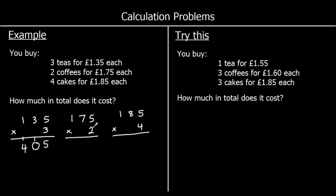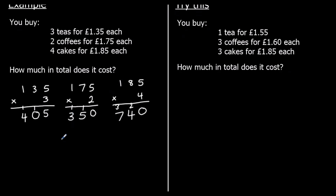For the coffees: two fives are ten; two sevens are fourteen, plus one makes fifteen; two ones are two, plus one is three — so 175p × 2 = 350p. For the cakes: four fives are twenty, zero in the ones carry two; four eights are thirty-two, plus two makes thirty-four, carry three; four ones plus three is seven — so 185p × 4 = 740p. The total cost is 405p plus 350p plus 740p.